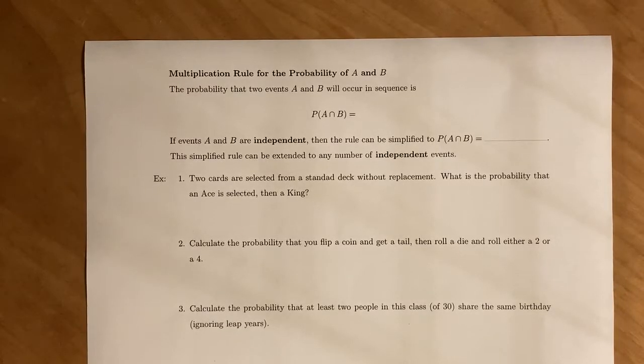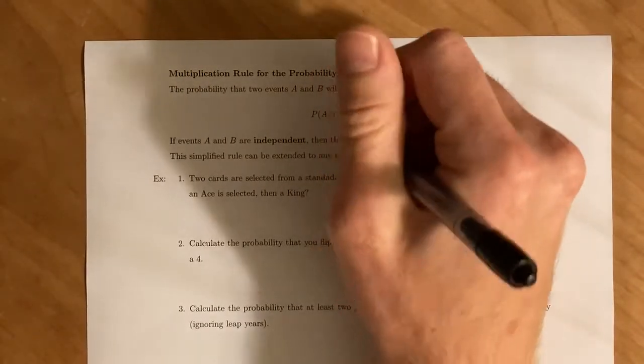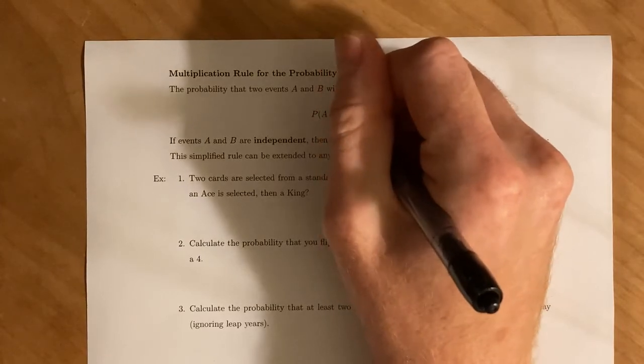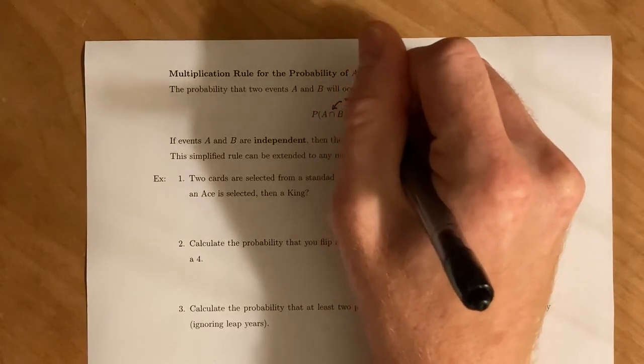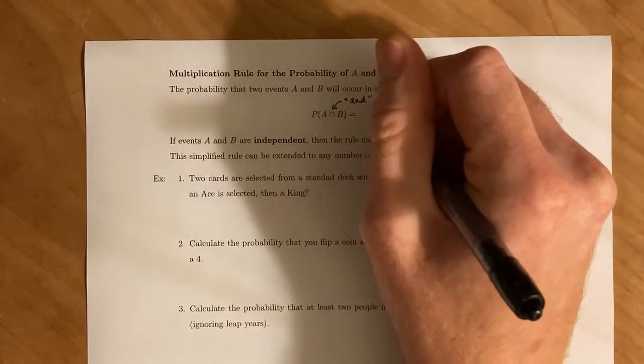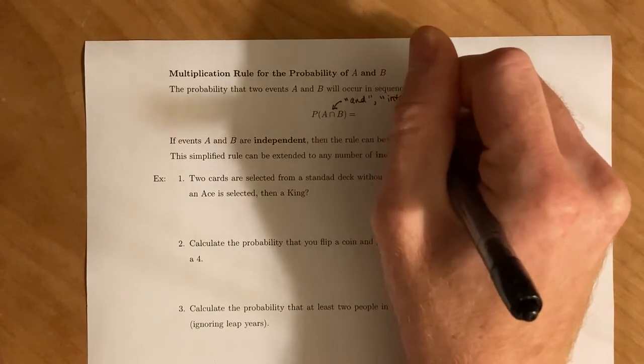Conditional probability allows us to start describing things with a multiplication. This symbol right here, you should read as AND or INTERSECTION.